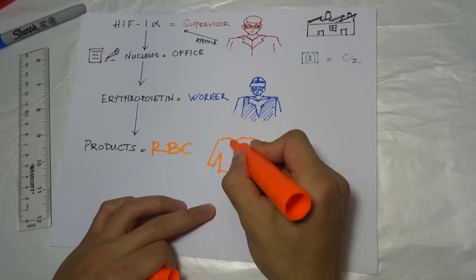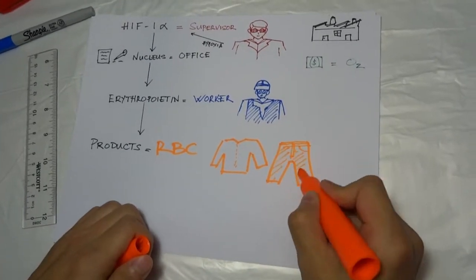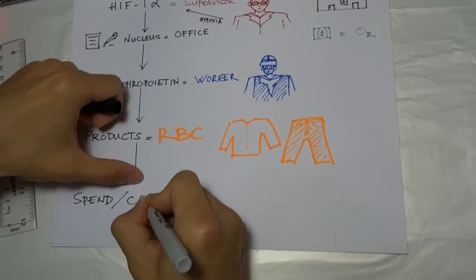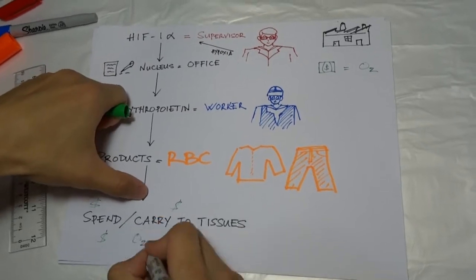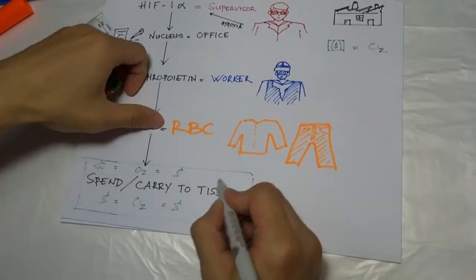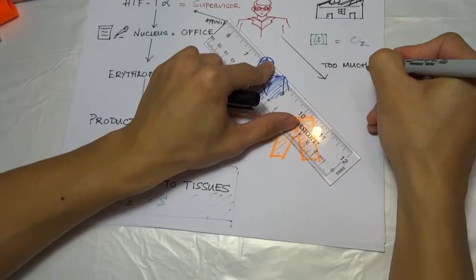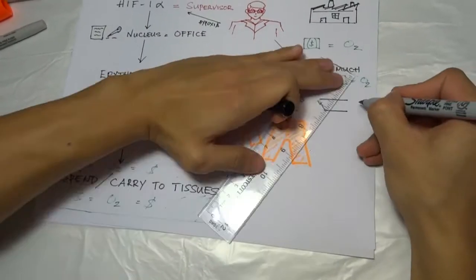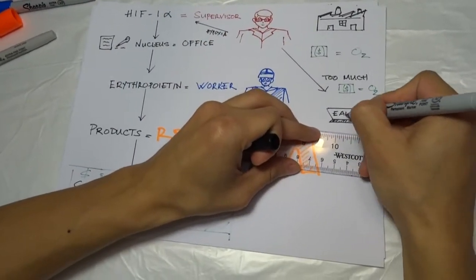After the products are made, they can be sold or used to make more money or oxygen for the company to spend. However, when money or oxygen is plenty, the supervisor will not need to make more money so he will become inactive and perhaps have a cup of tea.